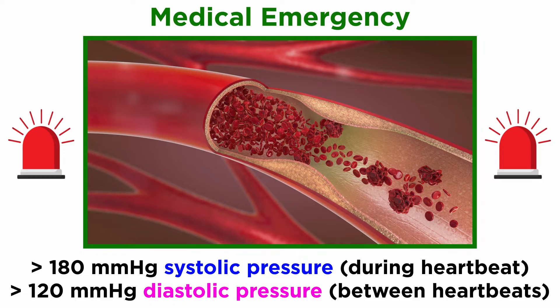Blood pressure above 180 over 120 is considered a medical emergency and must be treated immediately due to the likelihood of severe health consequences of ischemic heart disease or stroke, which can be acutely life threatening.